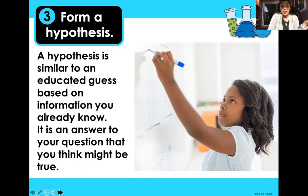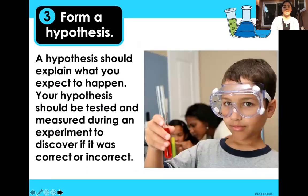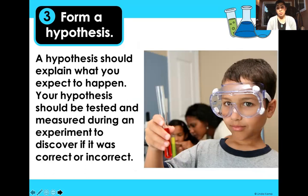You almost always want to be right, so you don't just make up a random funny thing — you're serious because you want to be right. Your hypothesis should explain what you expect to happen, and it should tell us what you think is going to happen with the experiment. Your hypothesis should be tested and measured during an experiment to see if you were right or wrong.